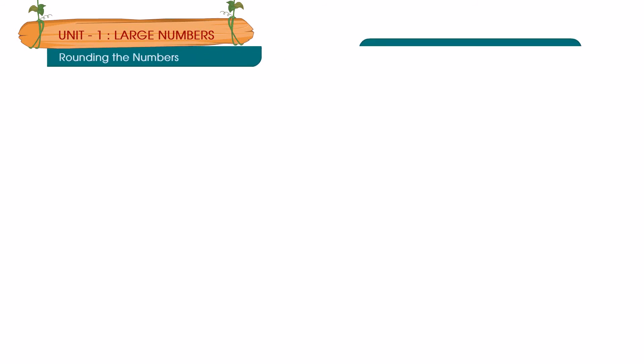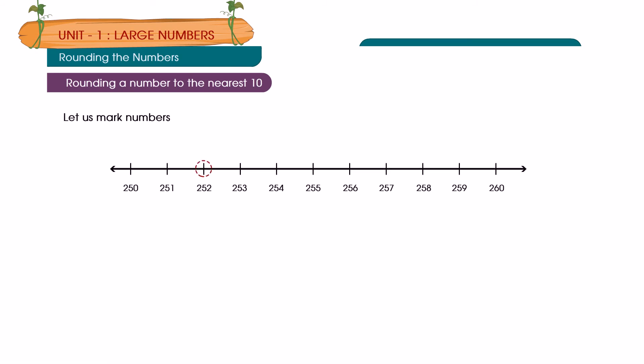Rounding the numbers: Rounding a number to the nearest ten. Let us mark numbers 252, 258, 255 on the number line. We see that 252 is closer to 250, so 252 rounds down to 250. 258 is closer to 260, so 258 rounds up to 260.